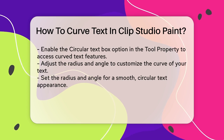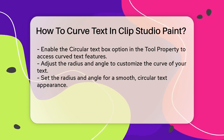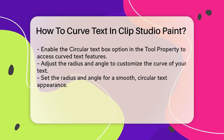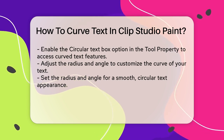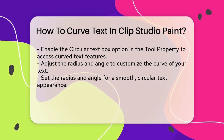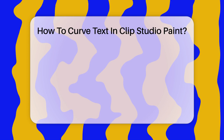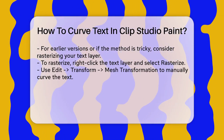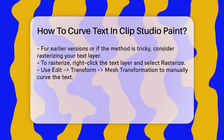Now you can adjust the radius and angle of the curve to get the desired shape. This is where you can customize how much your text curves and in which direction. For example, if you want your text to follow a circular path, you can set the radius and angle accordingly. This will give your text a smooth, curved appearance.